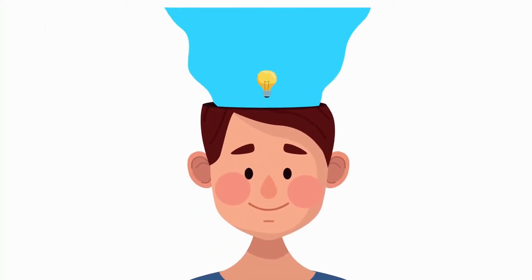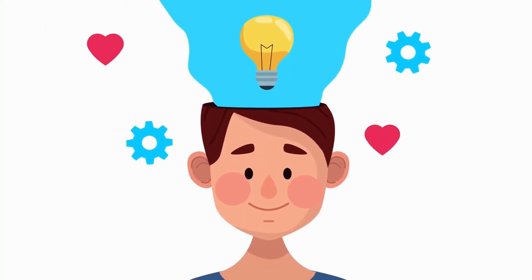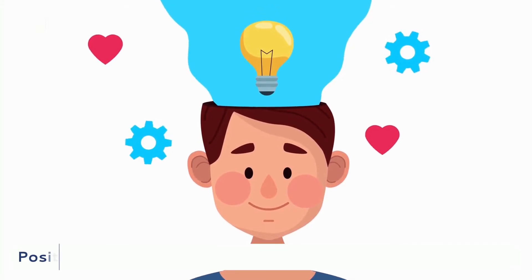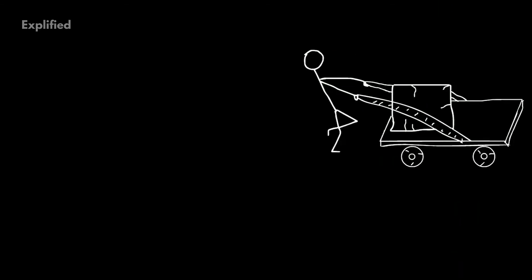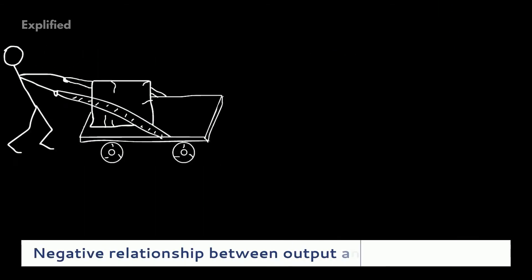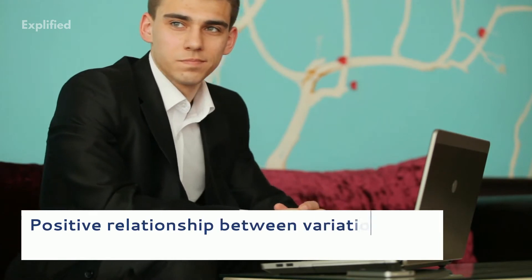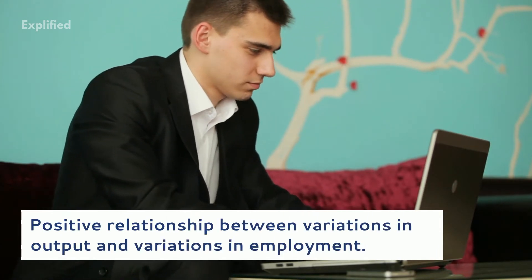The coefficient beta in Okun's Law depends on the coefficients in the two relations that underpin the law. The thought behind Okun's Law is simple: output depends on the number of labour used in the production method, so there is a positive relationship between output and employment. Total employment covers the labour force minus the unemployed, so there is a negative relationship between output and unemployment. Hence, Okun's Law can also be mapped as a positive relationship between variations in output and variations in employment.